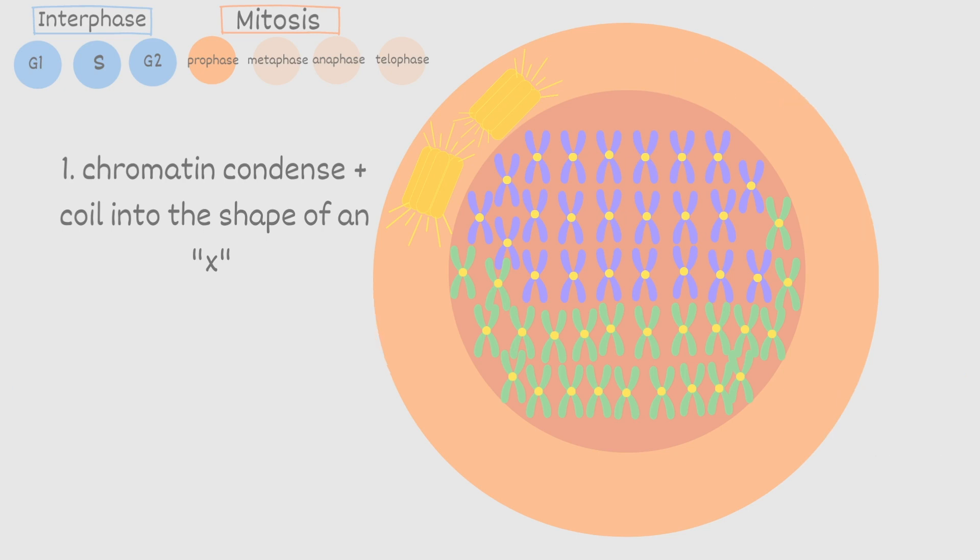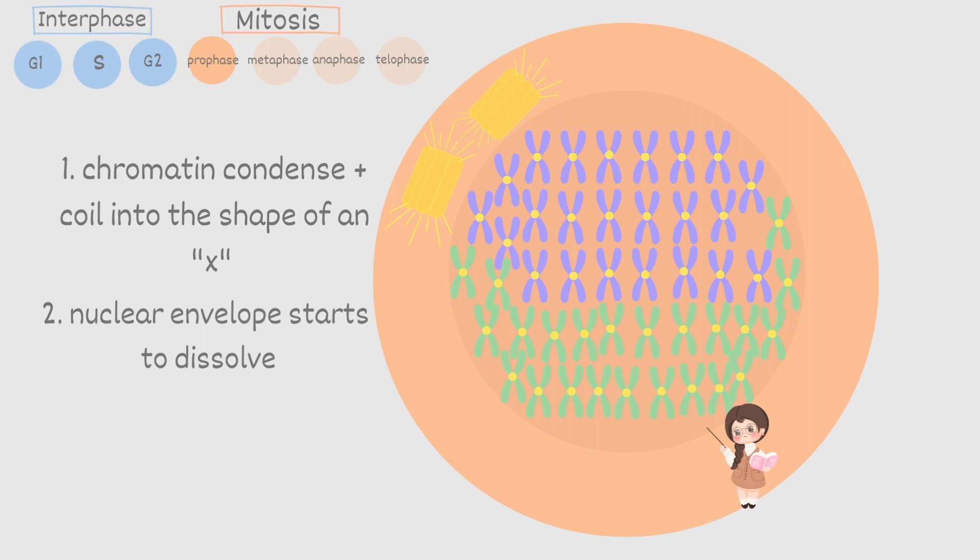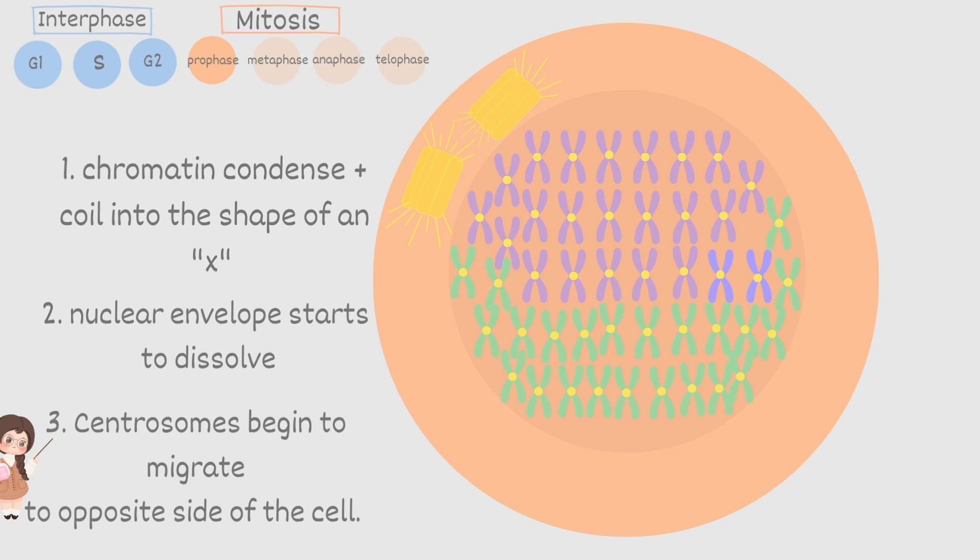In prophase the nuclear envelope also starts to dissolve. Losing the nucleus will eventually make it easier for the cell to split. Lastly the centrosomes will begin to migrate to the opposite side of the cell. You can also call this the opposite sides of the poles.